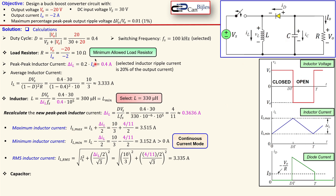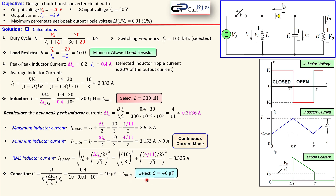The final component is the capacitor value. The capacitor is related to the output ripple, switching frequency, duty cycle, and resistor — everything except the inductor. Substituting the values gives 40 microfarads. You can take a larger value to decrease the ripple further, but 40 microfarads is the minimum needed for this design. The peak-peak capacitor current in the ideal case equals the maximum inductor current, which is approximately 3.52 amps.